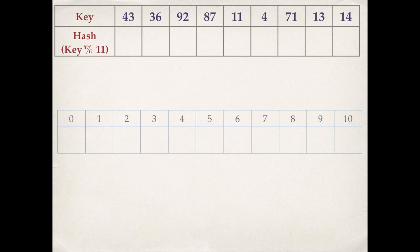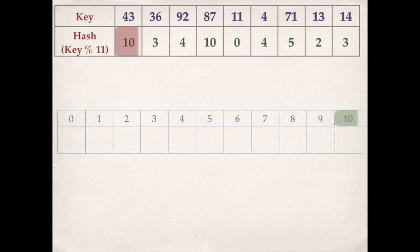The hash function is key mod 11, which means the remainder when the key is divided by 11. So when 43 is divided by 11, 10 is the remainder, and when 36 is divided by 11, 3 is the remainder. Similarly, we find the hash value for all keys. In linear probing, we always start with the index given by the hash function, and if the cell is empty we insert the key.